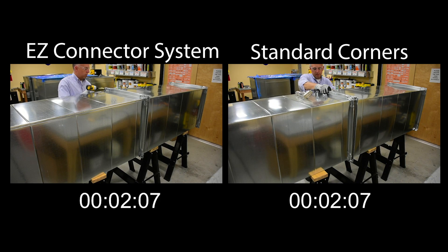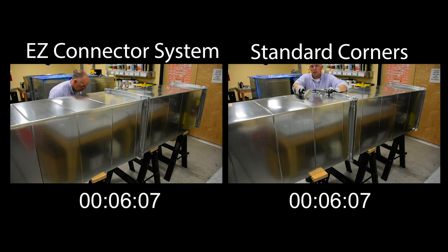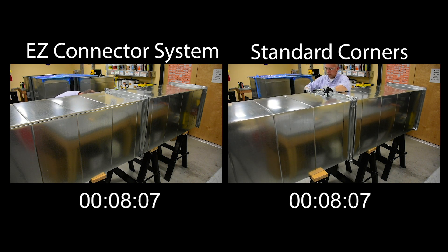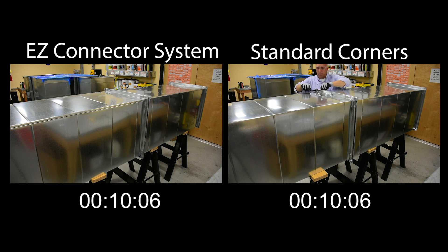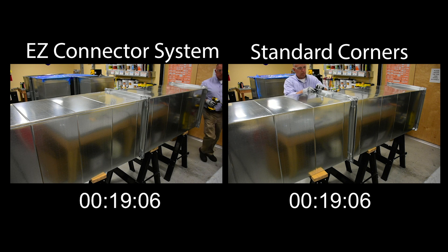Easy Connector from Duradyne is a new patented corner system which for the first time allows the contractor to make their duct joints with a super fast single locking bolt using only an impact driver. Compared to the traditional method of duct joint assembly, the Easy Connector system saves up to 50% installation time and cost.